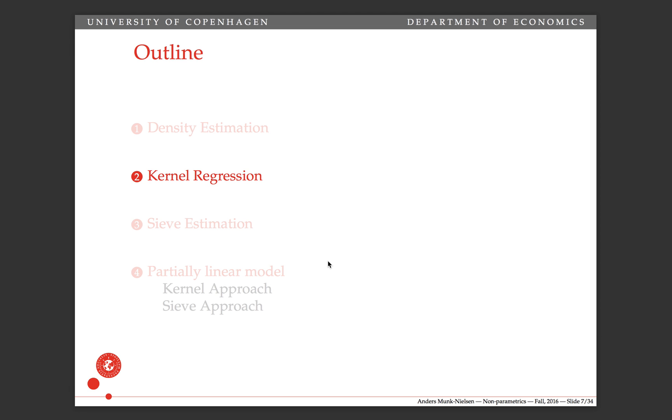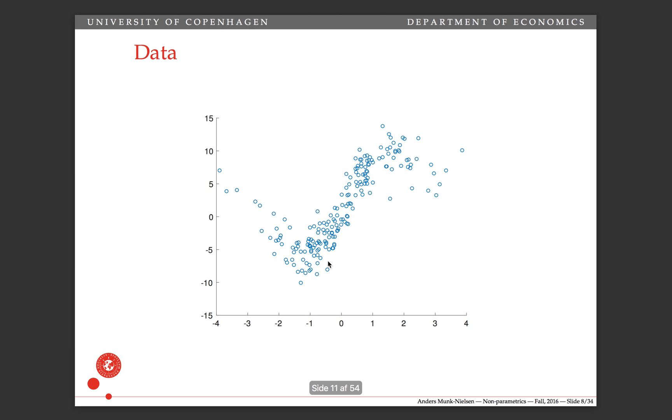With kernel regression, we're interested in a different objective than in density estimation. Basically, the data we're interested in looks like this: we have an explanatory variable x and we have our outcome y. Then we're interested in backing out the relationship between the explanatory variable x and y.